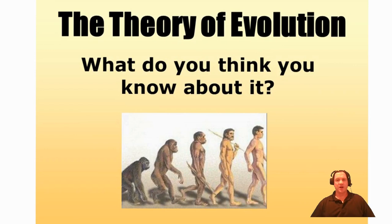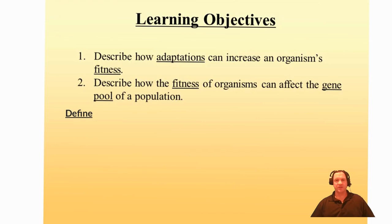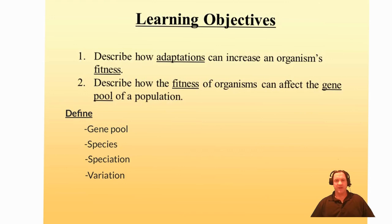Hello everyone, and welcome to this first week's lecture on the theory of evolution by natural selection. In our week one discussion board, I asked you to describe what you think you know about the theory of evolution. There are a lot of misconceptions out there, so I'm curious to see your responses. Our learning objectives are: describe how adaptations can increase an organism's fitness, describe how fitness can affect the gene pool of a population, and define the terms gene pool, species, speciation, variation, adaptation, fitness, and evolution.